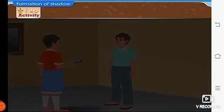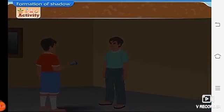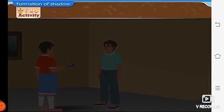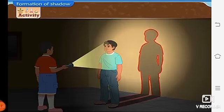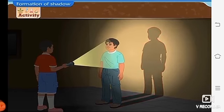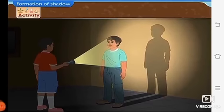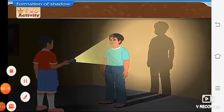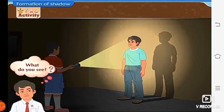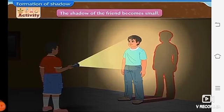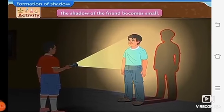Activity. Ask your friend to stand at a certain distance from you in a big room and obtain the shadow of your friend on the wall with the help of a torch. Now, carry out the following actions. Observe and make a note of the changes taking place in the shadow. Send the friend closer to the wall. What do you see? The shadow of the friend becomes small.